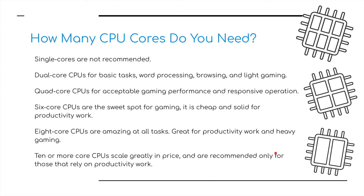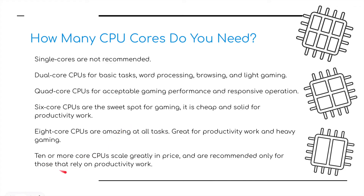With that in mind, how many CPU cores do you need? The dual-core processor is generally for basic tasks: word processing, browsing, and light gaming. Quad-core is for acceptable gaming performance and responsive operations. Six-core CPUs are the sweet spot for gaming — the best for computer gaming and solid for productive work. Eight-core CPUs are amazing at all tasks: great for productivity, work, and heavy gaming. Ten or more core CPUs scale greatly in price — they're very expensive and recommended only for those who rely heavily on productivity work or are professional gamers.